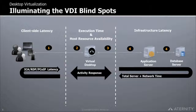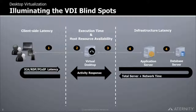The second blind spot is the actual application execution time spent by the virtual desktop or guest machine. The third is host resource availability, which provides the ability of a virtual desktop to acquire sufficient host resources to optimally execute its tasks. And the fourth and final blind spot is infrastructure latency, which represents the total network and server time spent until the virtual desktop receives a response from the application.